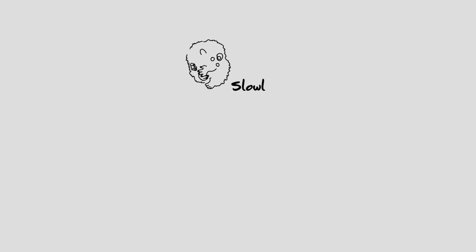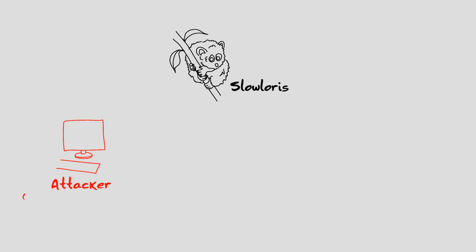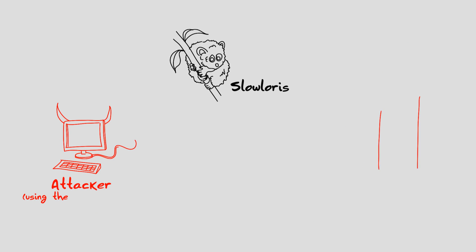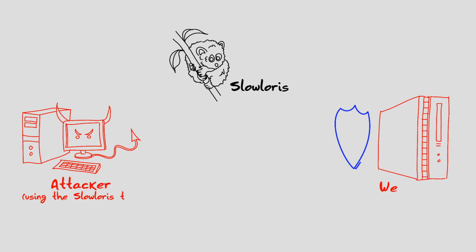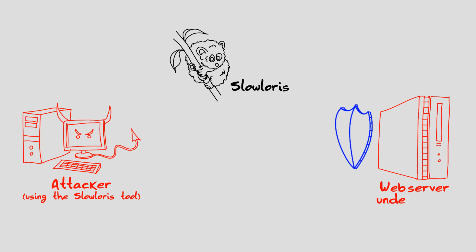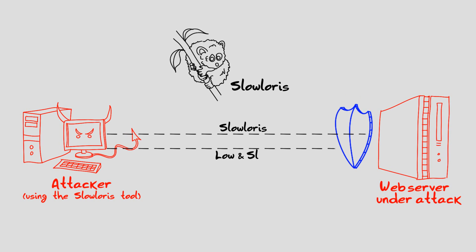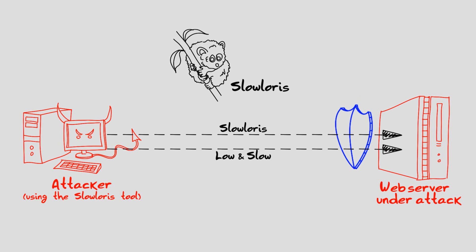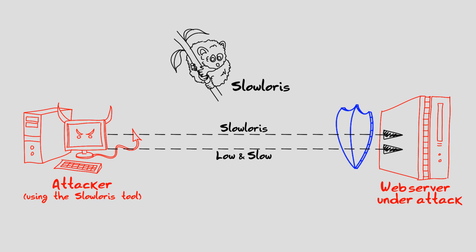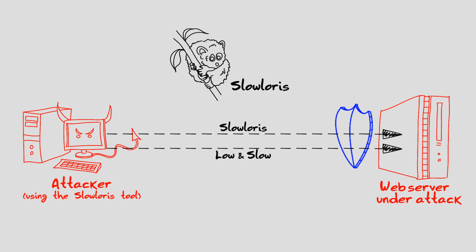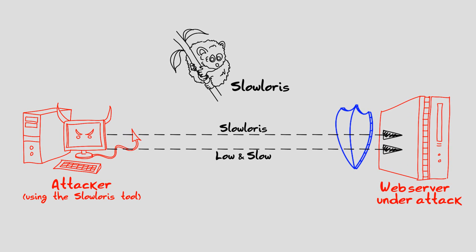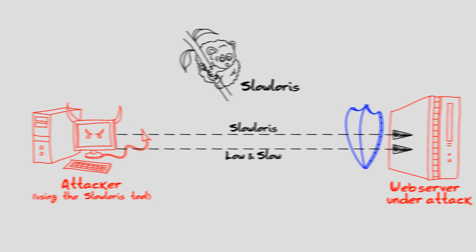The Slow Loris attack tool manages to evade traditional anti-DOS mitigation systems as it doesn't generate volumetric traffic or high-rated packets. However, it is a lethal attack on web servers that can easily prevent legitimate users from accessing online service.